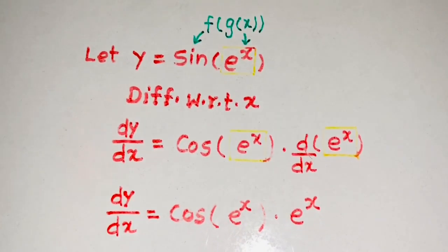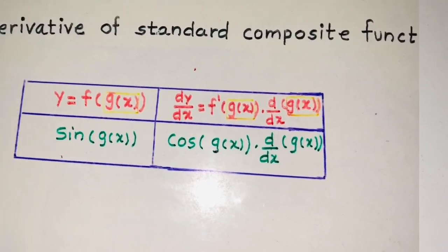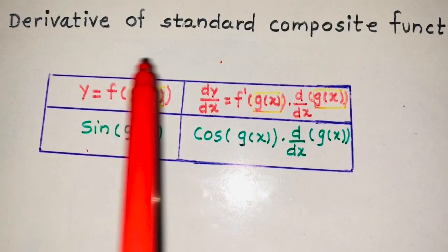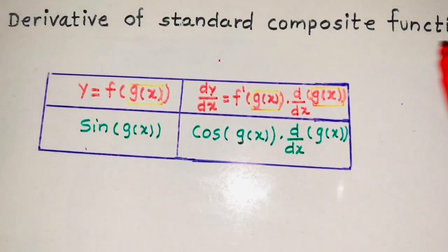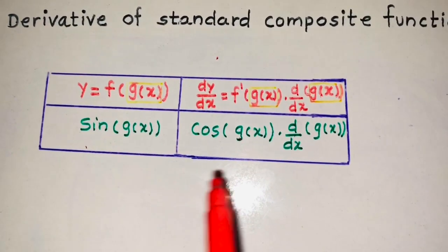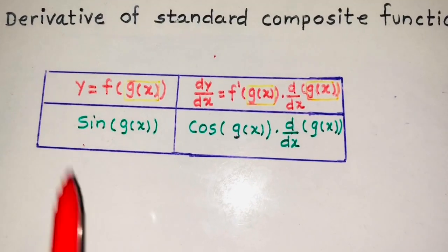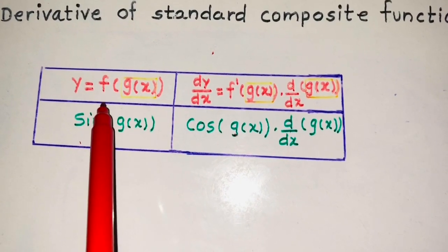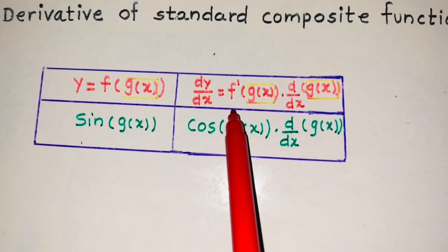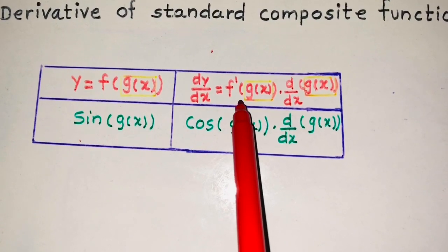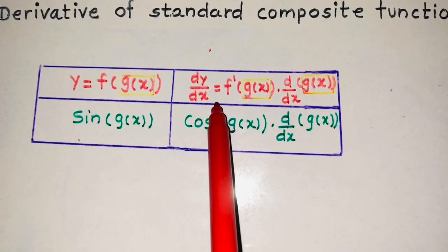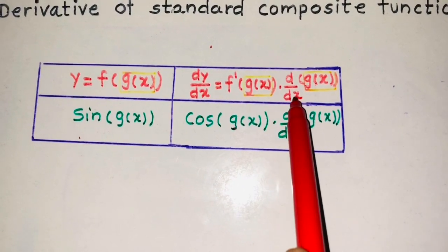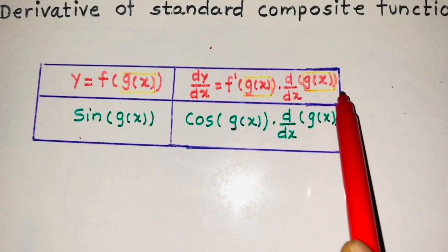I hope this is clear to all of you. Now we are going to see some formulas of the derivative of standard composite functions. Here we have two columns. In the first column, the composite function is y equal to f of g of x, and the second column is its derivative: dy upon dx is equal to f dash of g of x into the derivative of g of x.